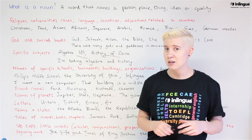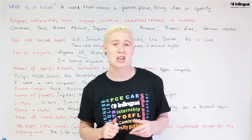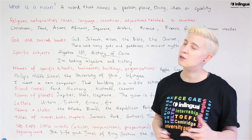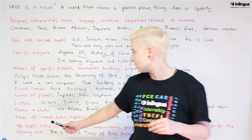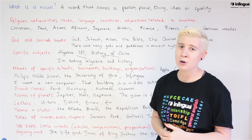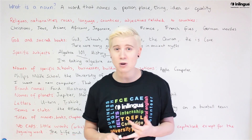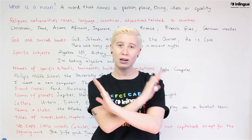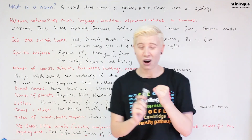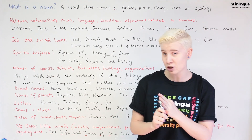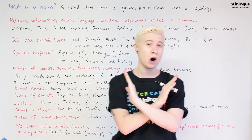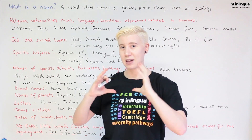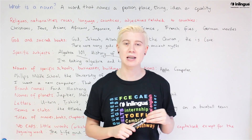Titles of movies, names of books, even chapters within books — we have to give them a capital. Jurassic Park, Gulliver's Travels, always take a capital letter. When you're writing out the titles of books, movies, TV shows, music albums — any titles — we do not capitalize the little words. The articles, the prepositions and the conjunctions within a title do not get capitalized, only the first letter and then all of the important words need to be capitalized.